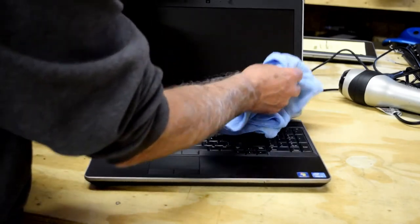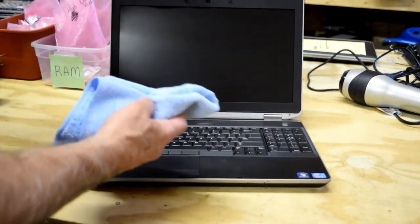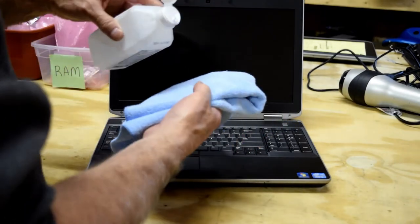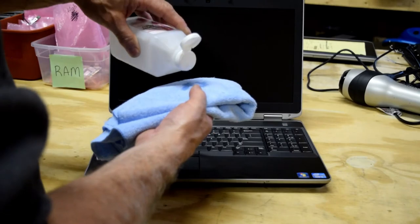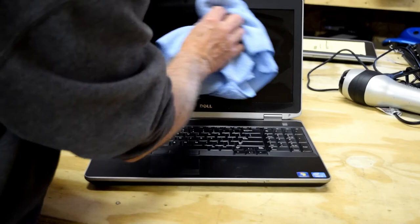If you do have some foreign material, add your 50-50 mixture and spray it actually onto the rag. Don't put it directly on the screen. Put it on the rag. Wipe it off and that'll take care of any foreign particles.